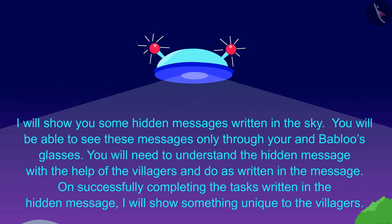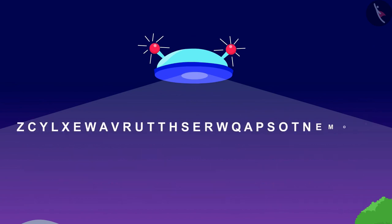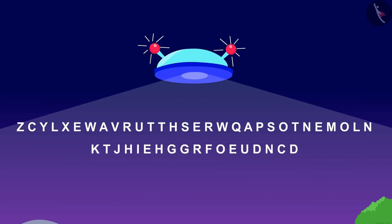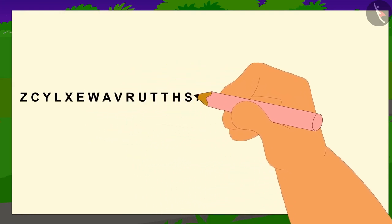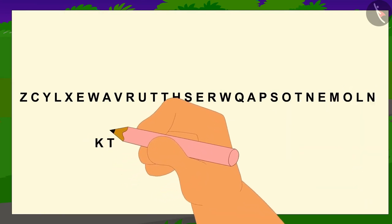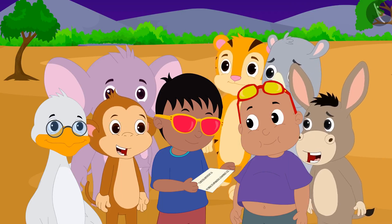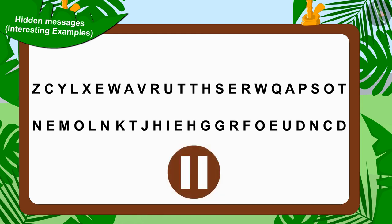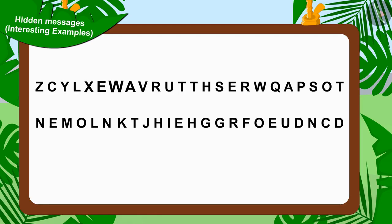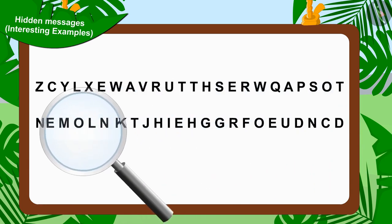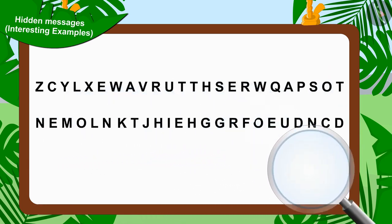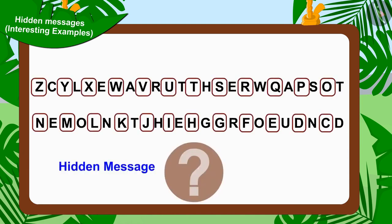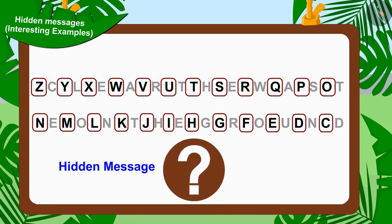After the message was completed, it disappeared and a new hidden message appeared in its place. Raju wrote the first hidden message on a piece of paper and showed it to the villagers. All the villagers got together to solve that hidden message. Children, can you solve this hidden message? If you wish to, you can stop the video and find the answer. Let us first find the rule in these alphabets. If we look closely, we will find that the alphabets here are written in reverse order. But do you understand any hidden message from these alphabets?